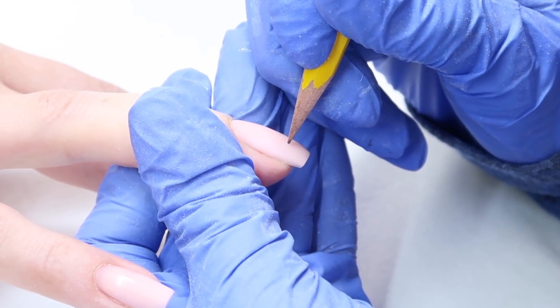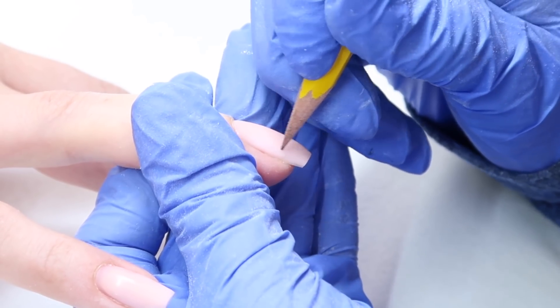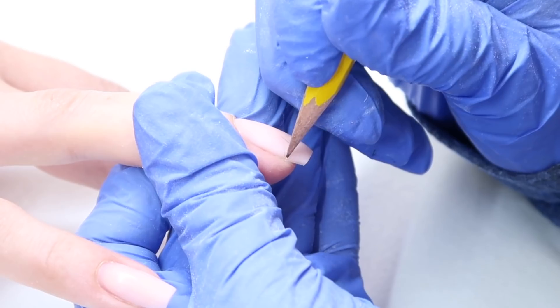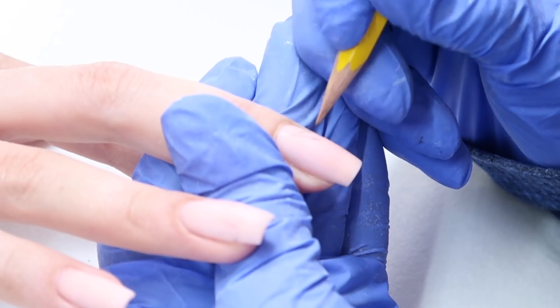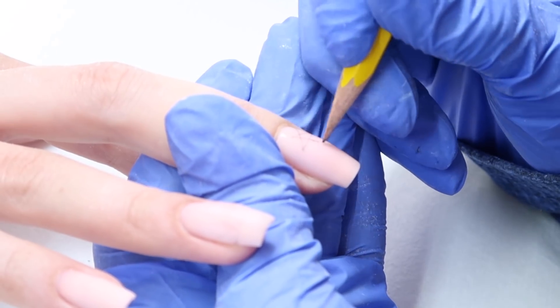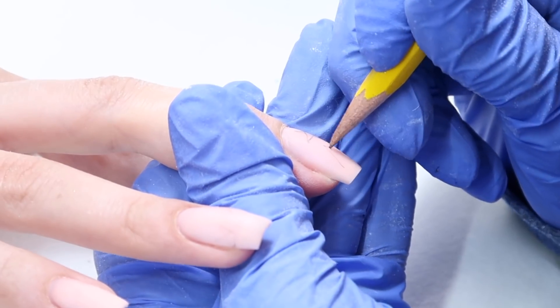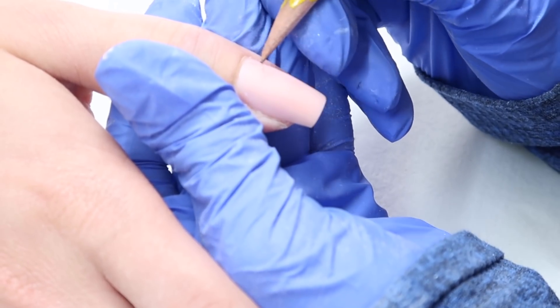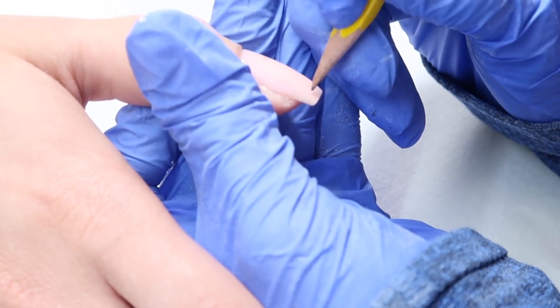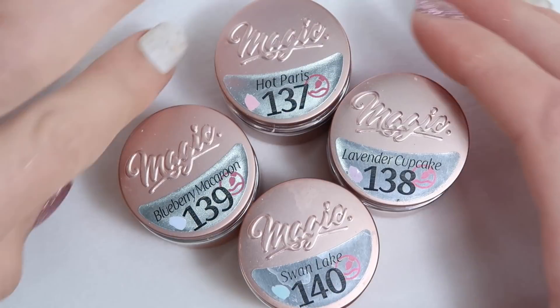Now that matte top coat is on, I'm going to be drawing some stars on her nails with a pencil. You could just use any pencil, doesn't have to be special or anything. I find it a little bit harder to actually draw on the matte, but it's okay. As long as I got the outline, that's all I really need. It'll be easier to draw on the plain nails. The paints I'm going to be using are from Magic Gel.